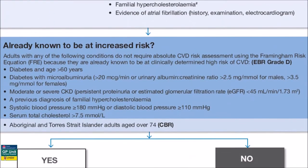People who have one of these clinical features are automatically considered to be categorically at high risk: basically, older people with diabetes, diabetes with microalbuminuria, moderate or severe chronic kidney disease, familial hypercholesterolemia, or very high blood pressure or cholesterol.